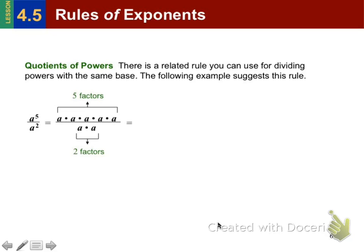What about the quotient of powers property? So there's a related rule for dividing factors. And here is an example that would suggest this rule. So if you have a to the 5th divided by a squared, and you write it out as a repeated factor, you can see that they will cancel out because they will be equal to fractions equal to 1. A divided by a is 1. So depending on the number of a's in the denominator would be the number of a's you could subtract from the numerator, and you're left with 3 factors. So a cubed would be the answer.